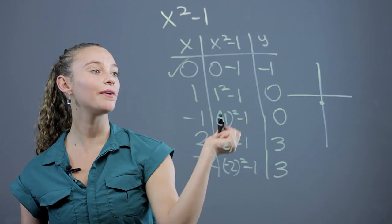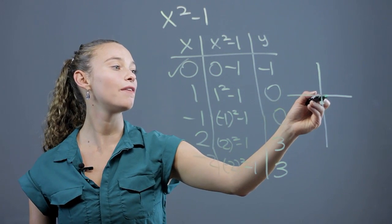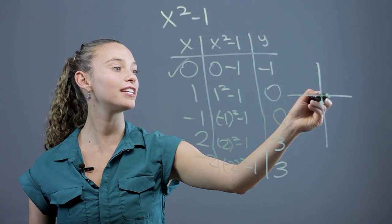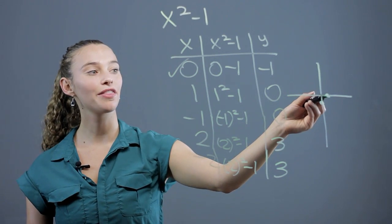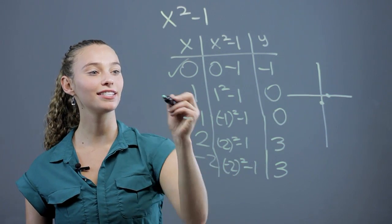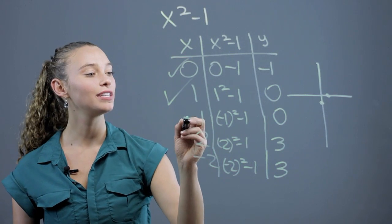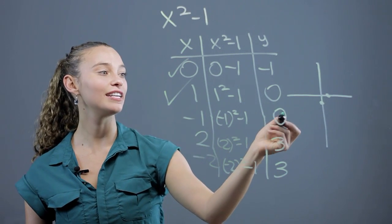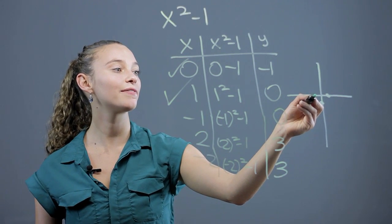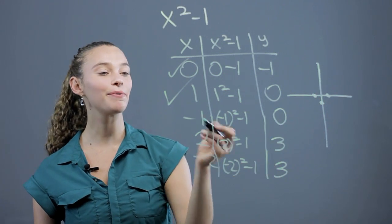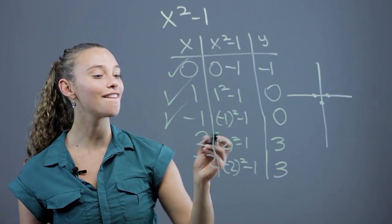We have 1, 0. That's another point. So we go over 1, and we stop at 0 on the x-axis. That's another point. We can check that off. We have negative 1, 0. Go over negative 1. That's another point. We can check that off.